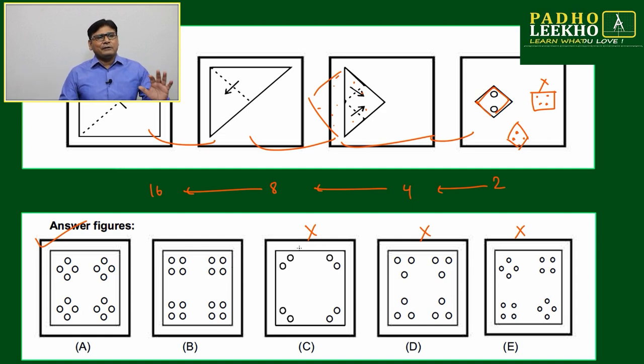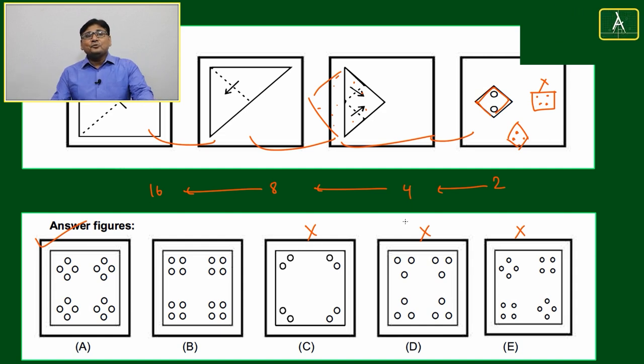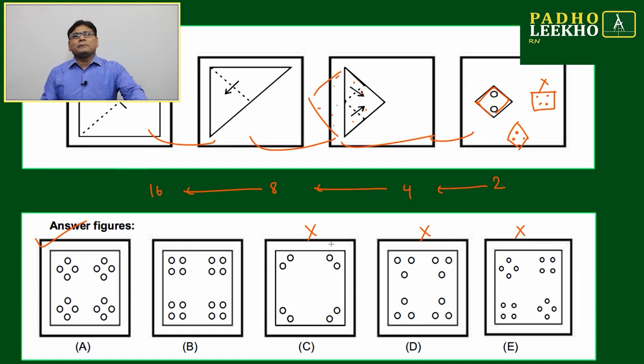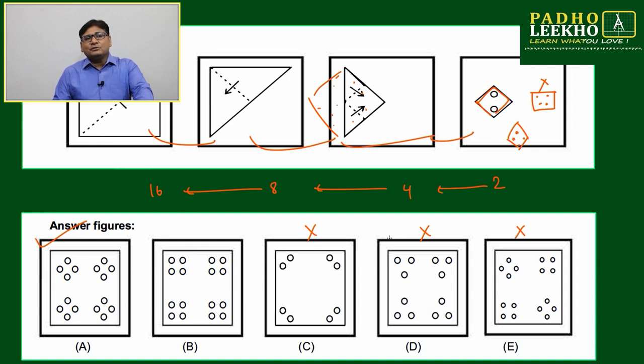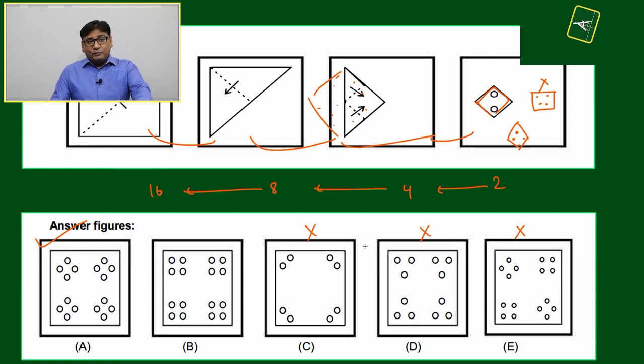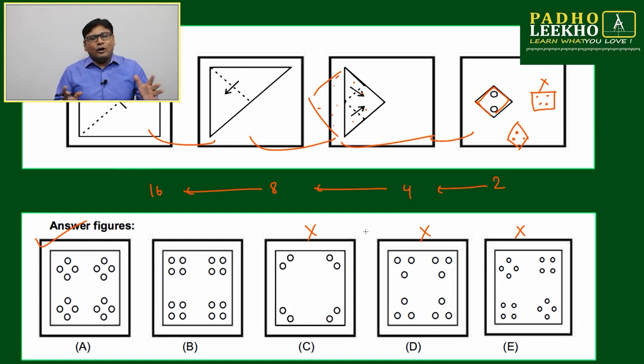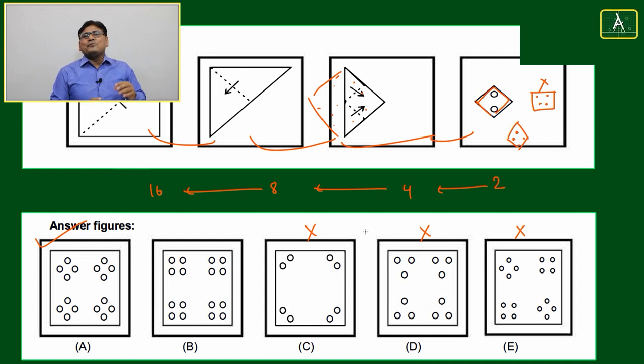But if you know this concept, if you are applying a little bit of your mathematical knowledge—how many foldings are there and based on that how many holes will happen after unfolding—then things will become much easier. If you are not applying this, what you have to do? You will get confused for all the option choices. Maybe you will feel option C also can be possible, D also can be possible, anything can be possible.